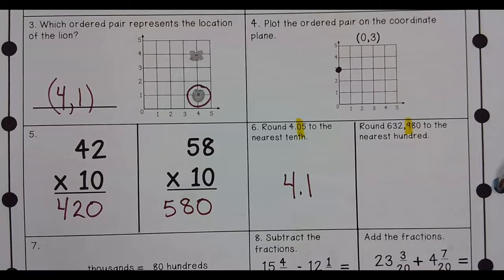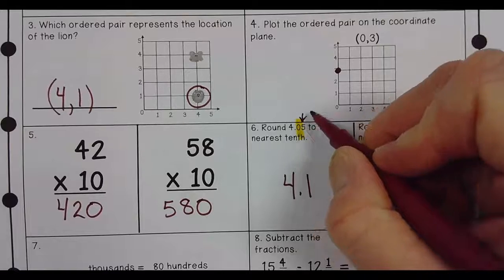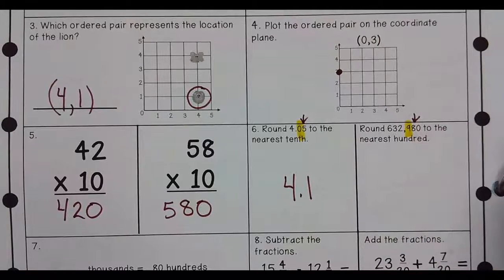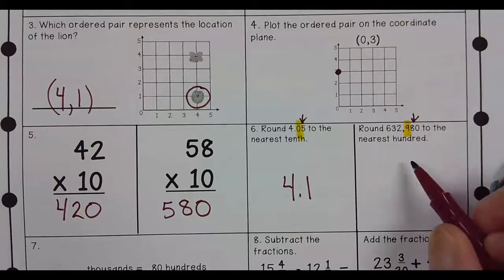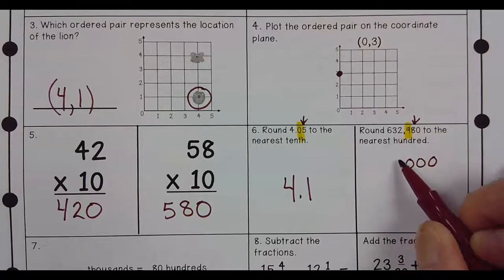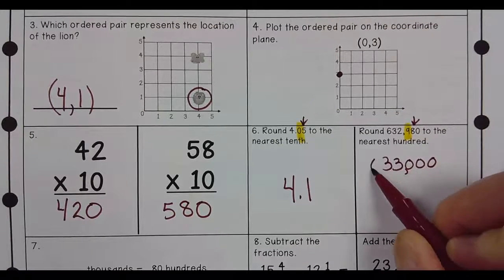Oh, that one's being sneaky. Point to the next door neighbor. Eight is going to bump the nine up. Nine is going to become a zero, which in turn is going to bump the two up to a three. So it would be 633,000.